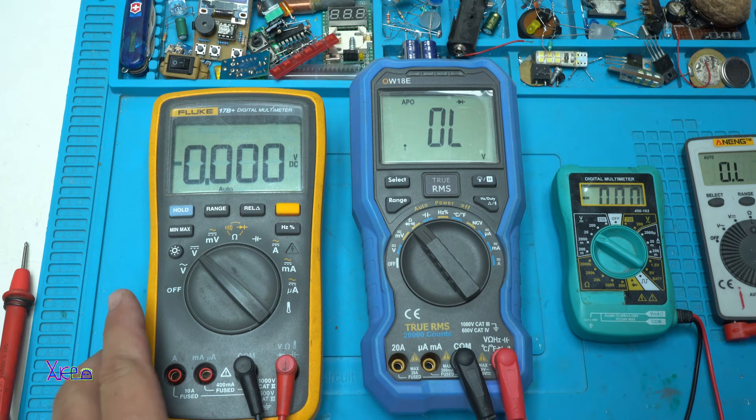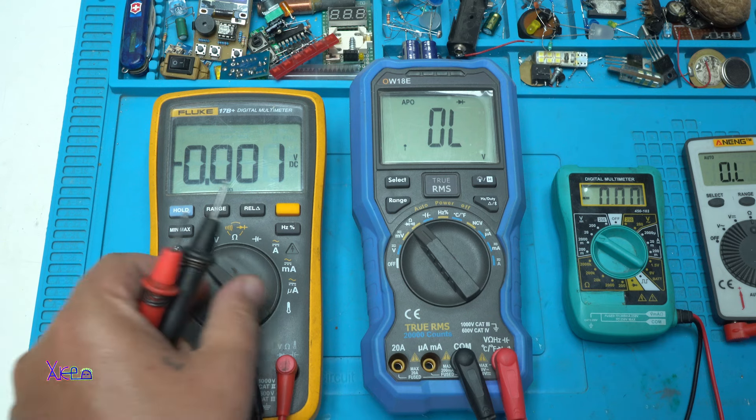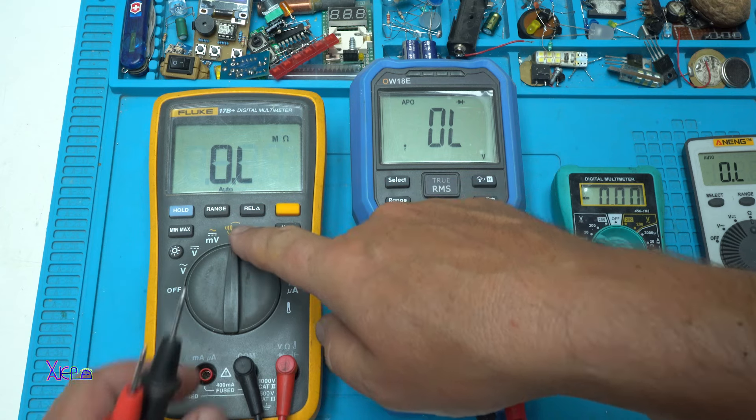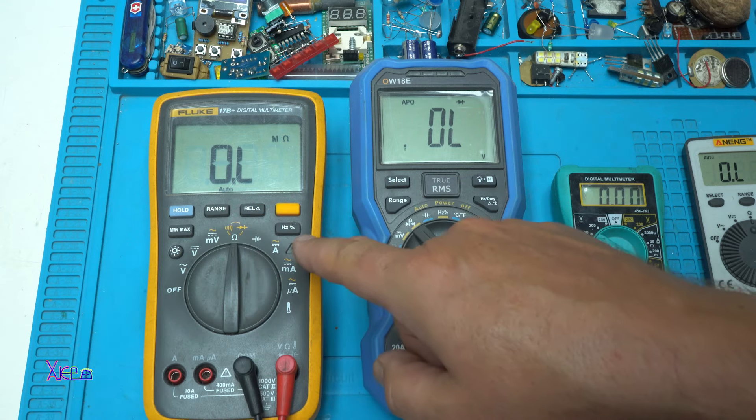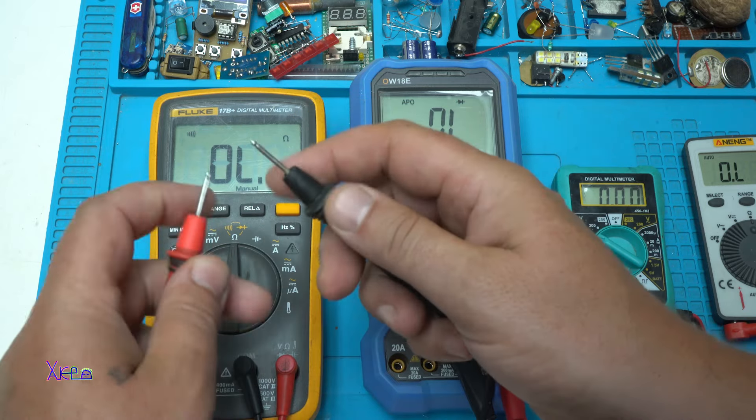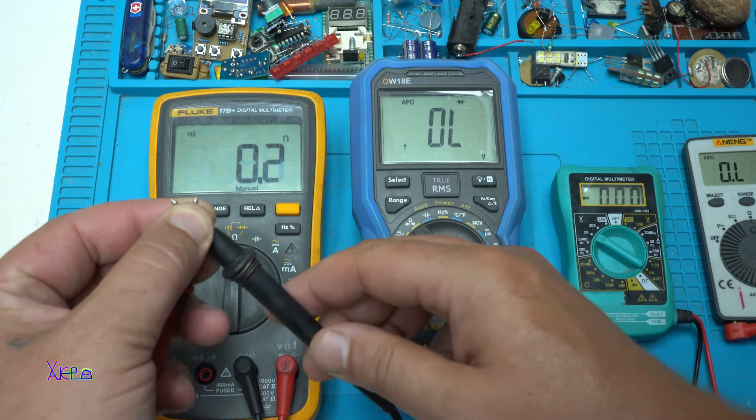If you want to check some wires for continuity, you need to select this beeping signal right here. And manually select that beeping signal. And when you shoot the probes, there is continuity.